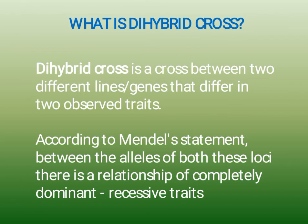So genetics is the science of heredity and variation. Now we will proceed with our today's topic, dihybrid cross. Dihybrid cross is a cross between two different lines or genes that differ in two observed traits. According to Mendel's statement, between the alleles of both these loci, there is a relationship of completely dominant recessive traits. So dihybrid cross means a cross between two pure lines with two different pairs of contrasting characters.